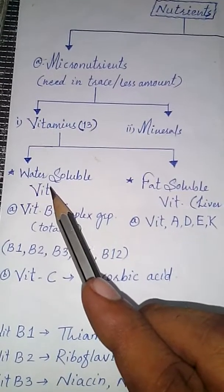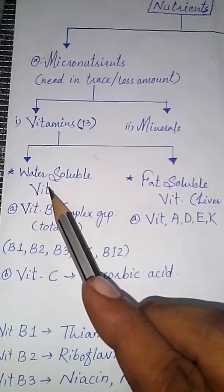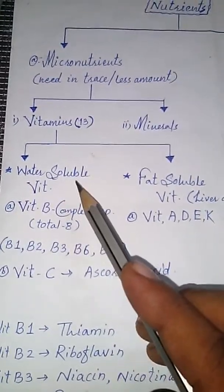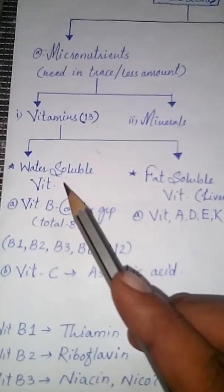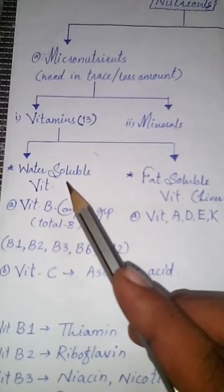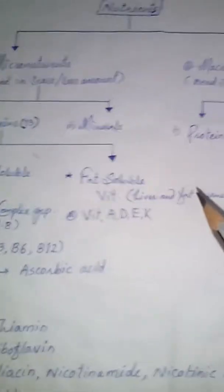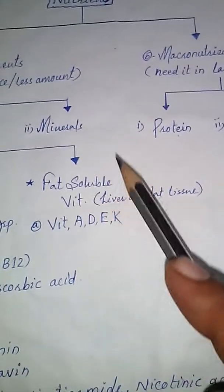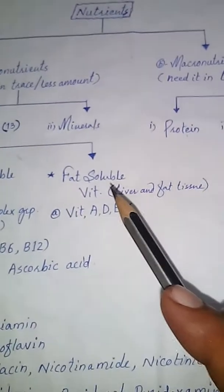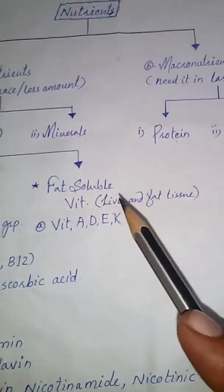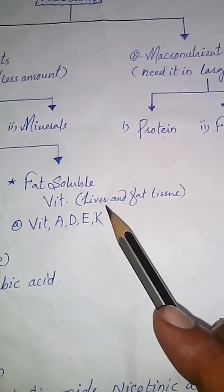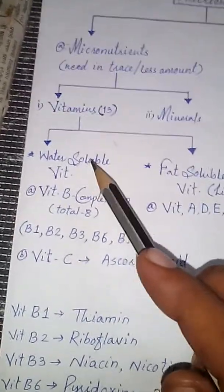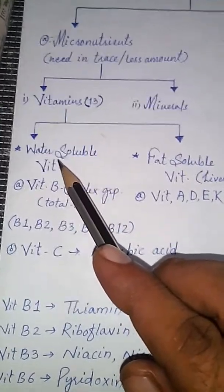Water soluble vitamins are those vitamins which are not stored in our body in any area. Since they are not stored, they are required in a less amount and are released from body fluids like blood and other liquids. While the fat soluble vitamins are stored in our body — the different tissues and cells use them, and if not in use, they are stored in the liver and fat tissue.